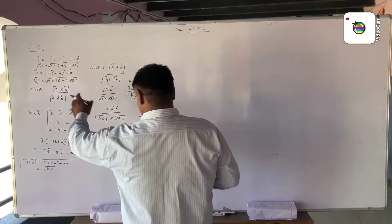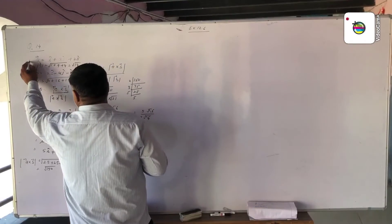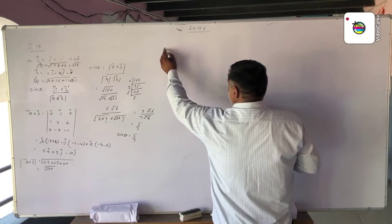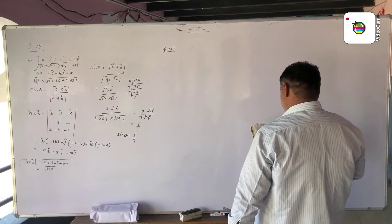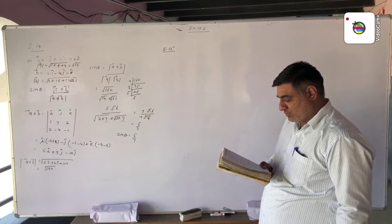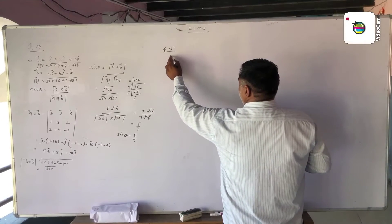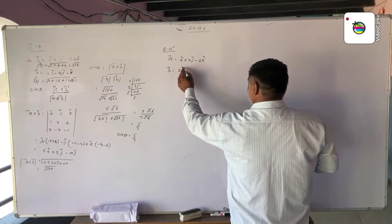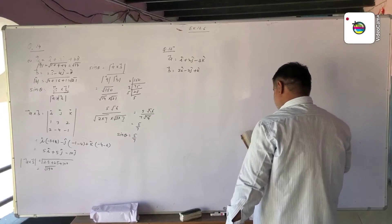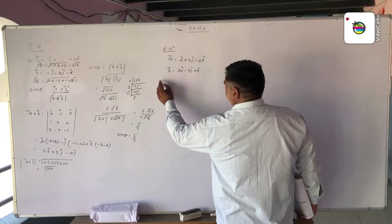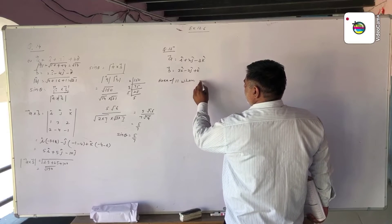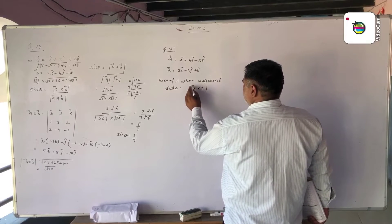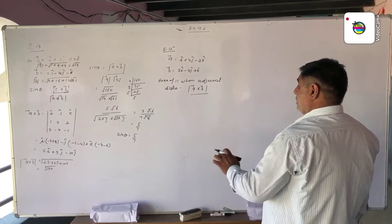Now the second part of the question is similar to the first part. In question number 15, we need to find the area of a parallelogram when the sides are given as vectors. Let vector A equal to I plus 2J minus 3K. The area of a parallelogram when adjacent sides are given is the magnitude of vector A cross vector B.